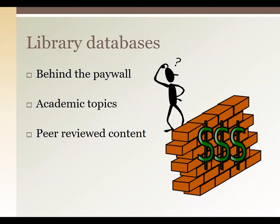How are library databases different from Wikipedia? There are three main differences. One important distinction is that they're often not free, which means your tuition and government funding enables the library to purchase subscriptions that you can then use. That's why it's important to use the library's website as a portal, because if you try to access them through Google, you'll be directed to pay for the content — and you really don't need to do that.